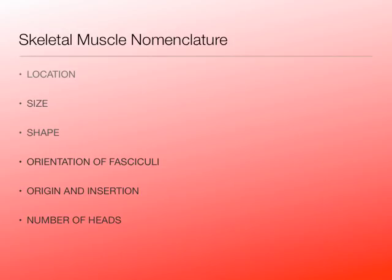The seventh and final characteristic is function — some muscles tell us what they do. Examples include pronator teres, supinator, flexor or extensor muscles, and in the lower limb, adductor magnus and adductor longus, where the adductor term is the functional term.